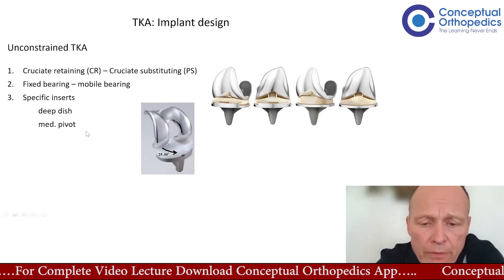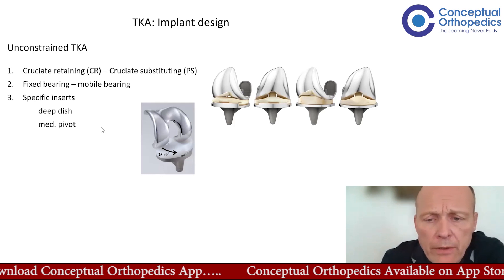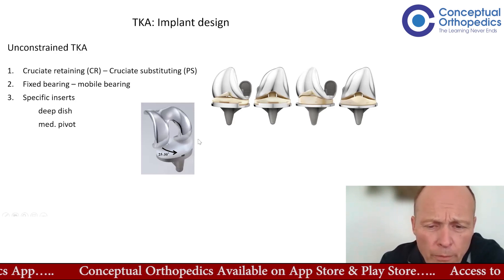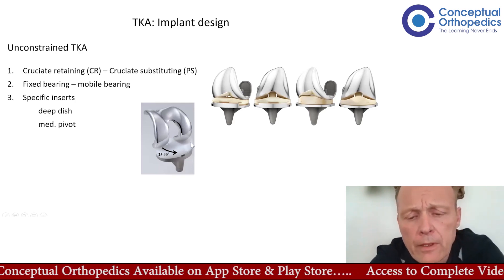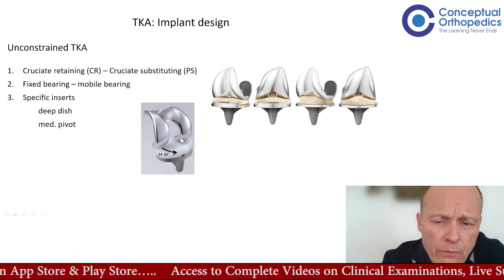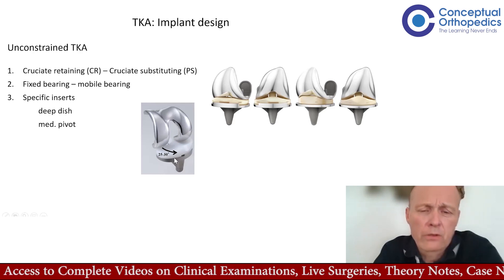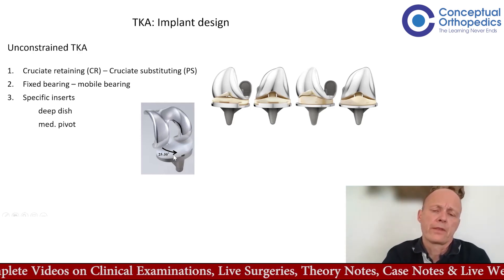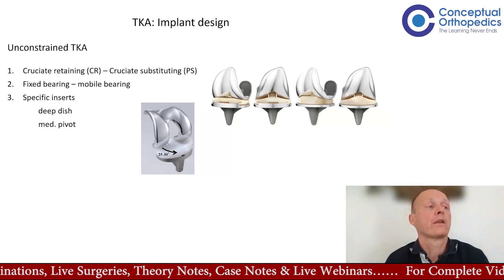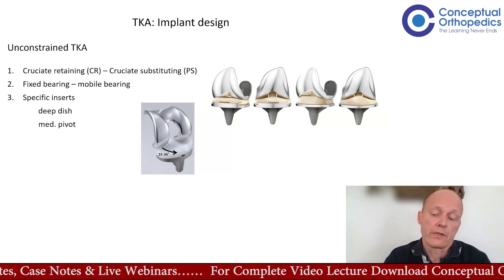A medial pivot knee tries to mimic the natural situation a bit better than the standard insert. You have a conforming medial insert that matches the femur quite well, and there is not a lot of AP translation in that compartment. But in the lateral compartment, the insert is very flat and allows translation on the lateral side, mimicking the natural behavior of the knee when it flexes. A very interesting idea.